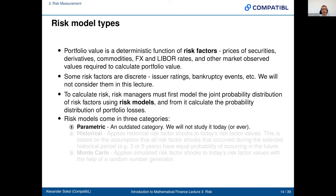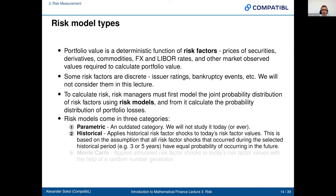Risk models come in three categories. The first is parametric, which is an outdated category that nobody uses anymore — it was pioneering 20-30 years ago but is now a historical curiosity. The two methods used today are Historical simulation and Monte Carlo simulation.